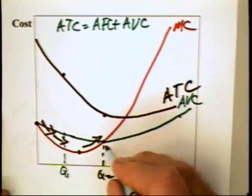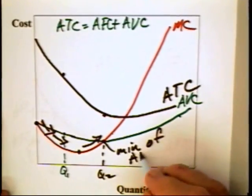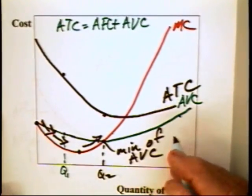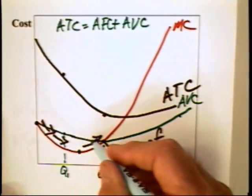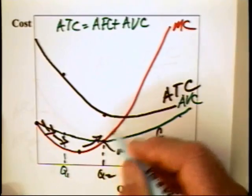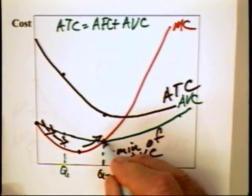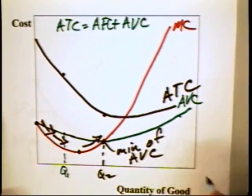Now, again, this is the minimum of the average variable cost curve. The reason we know that is that so long as the marginal is below the average, the average has got to be falling. Once the marginal gets above the average, the average has got to be rising. So this must be the minimum of that point.